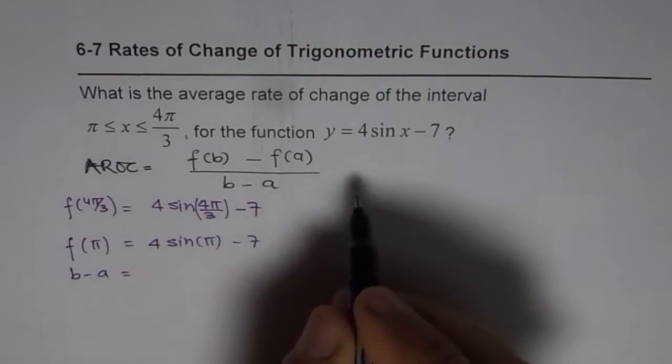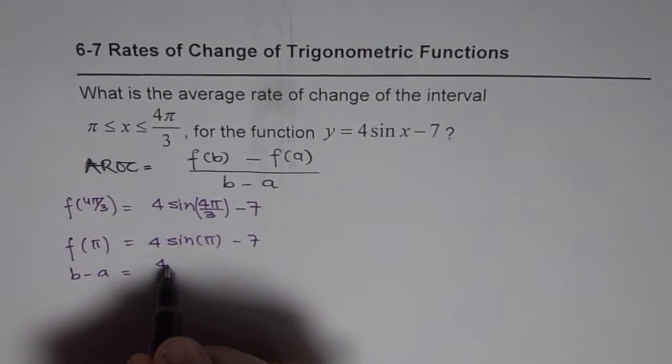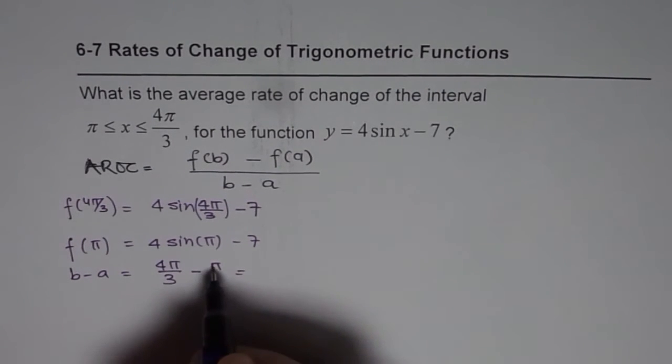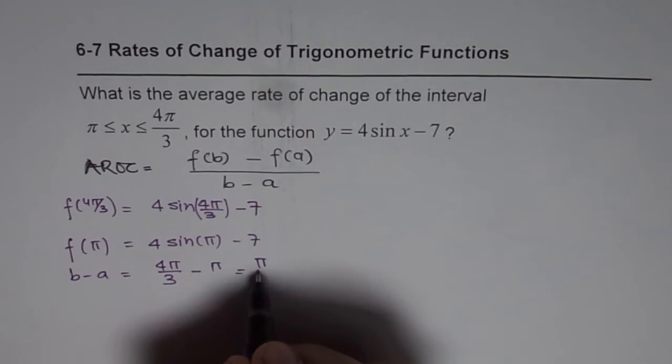And what is b minus a? b minus a for us will be 4π/3 - π which is you can take 3 here which is π/3.